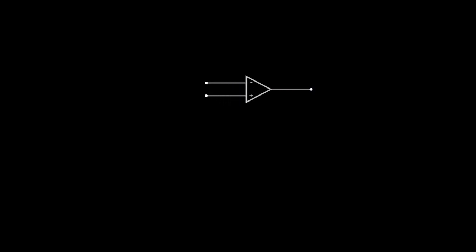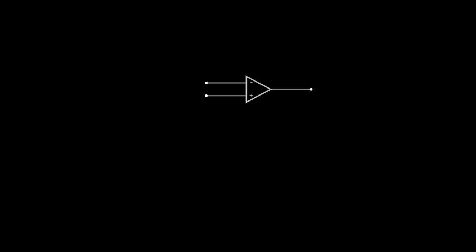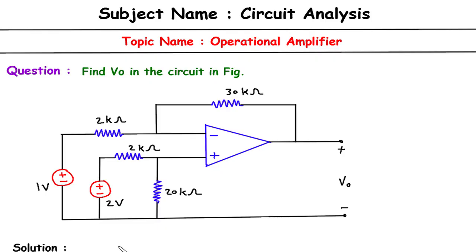Then after that, we need 3 resistors here and 1 resistor here, so 4 resistors total. We will draw the resistors now — one resistor here, and three more. Then we also need 2 voltage sources.